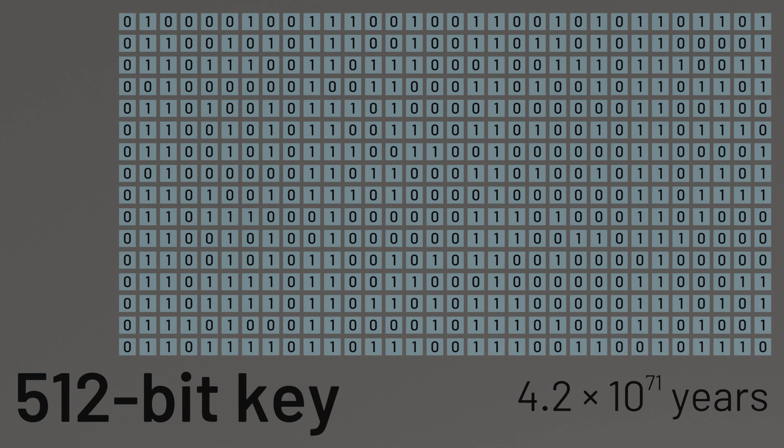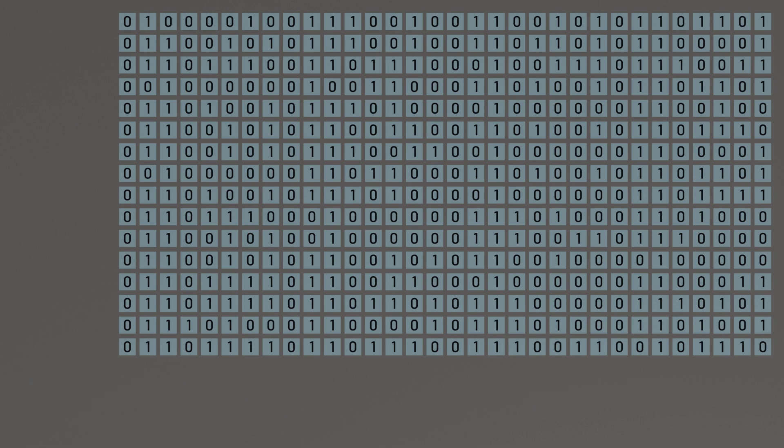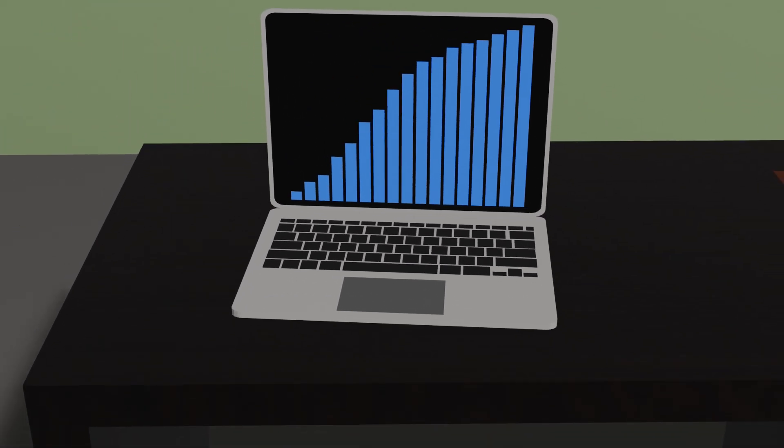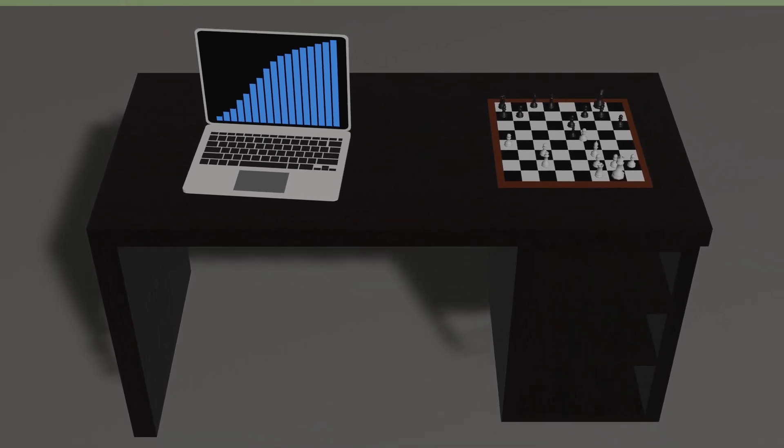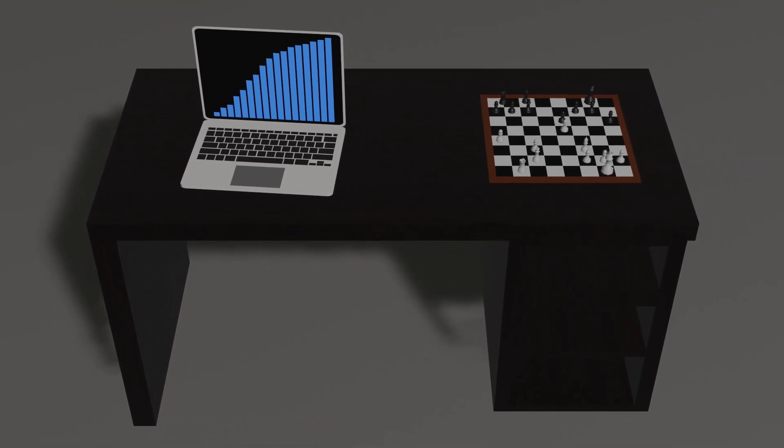Computers today are of course quite far away from hitting Bremermann's limit, and other more practical limits are likely to restrict computational speeds long before we get there. But there is a limit. That means that certain kinds of computations will never be practical, no matter how big or how fast the computer.